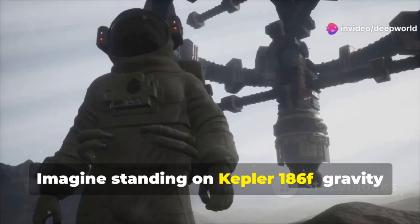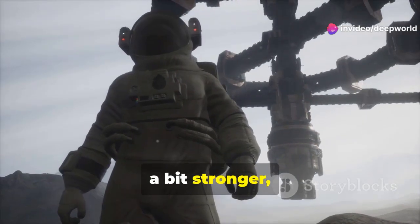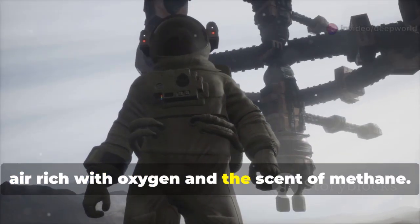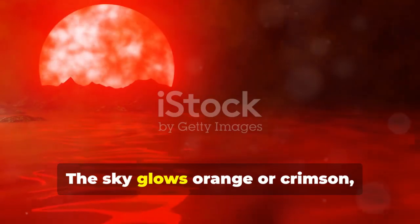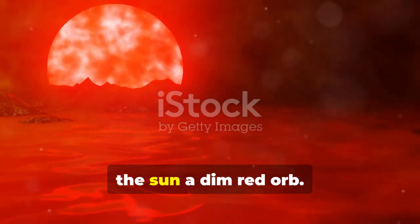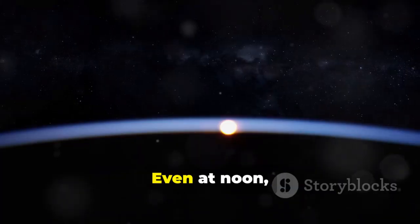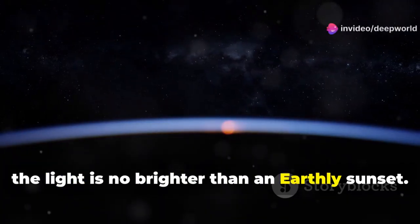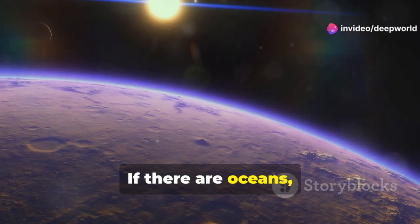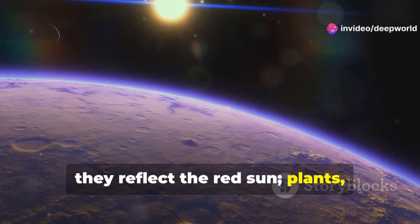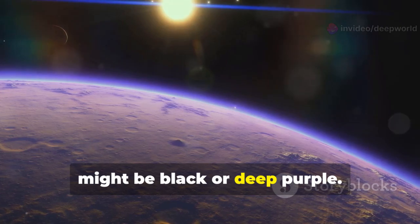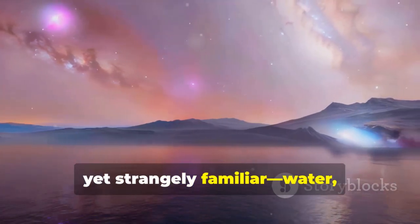Imagine standing on Kepler-186f: gravity a bit stronger, air rich with oxygen and the scent of methane. The sky glows orange or crimson, the sun a dim red orb. Even at noon the light is no brighter than an earthly sunset. If there are oceans they reflect the red sun. Plants, if they exist, might be black or deep purple. The world is alien yet strangely familiar—water, air, life.